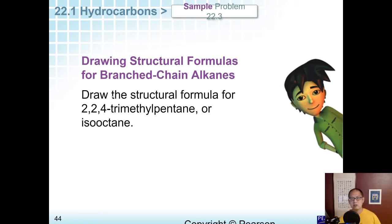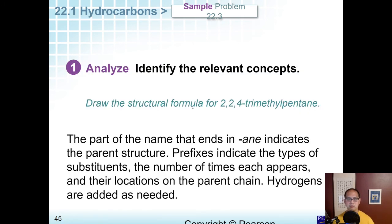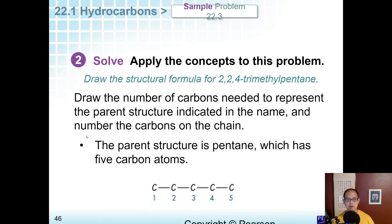The first thing you want to do is what is the parent? For the parent, I'm just going to ignore all this 2,2,4-trimethyl business and go with pentane. So pentane is going to be 5 carbons. I'm just going to draw 5 carbons. 1, 2, 3, 4, 5, and I'm going to label them 1, 2, 3, 4, 5. 2,2,4-trimethylpentane. I ignore the prefix for now, and I just stick with pentane, and that gives me 1, 2, 3, 4, 5.